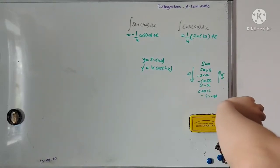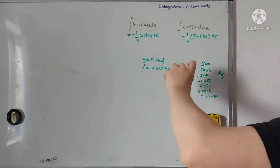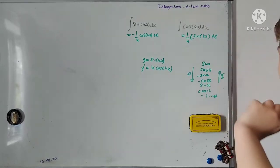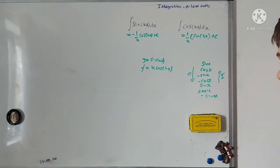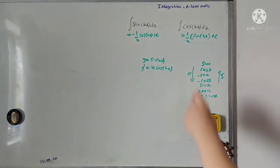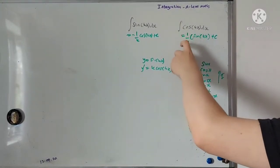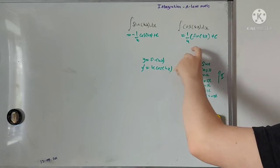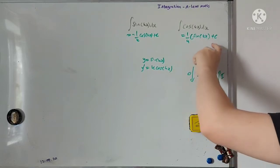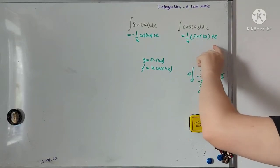So let's think about it. If I was going to integrate cosine of 2x — well, cosine 2x integrates to 1 over 2 sine 2x. And you can see it rather than having to derive it.